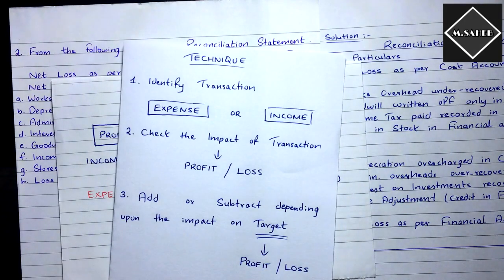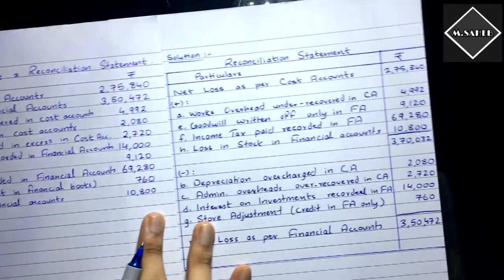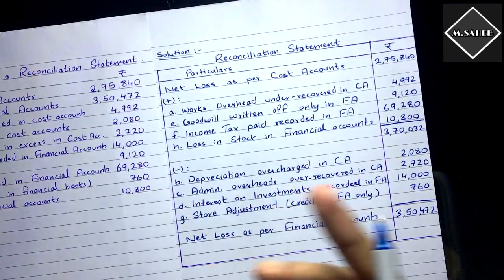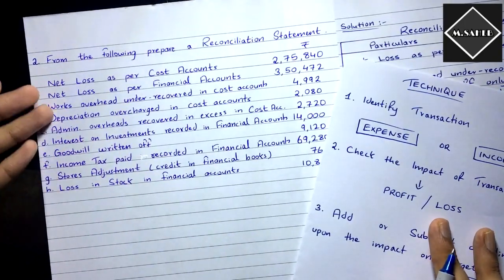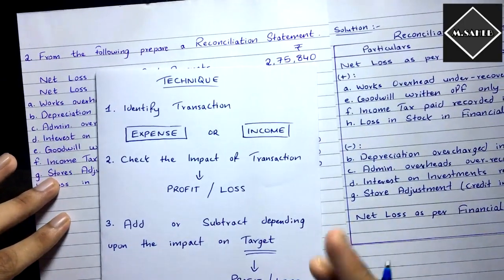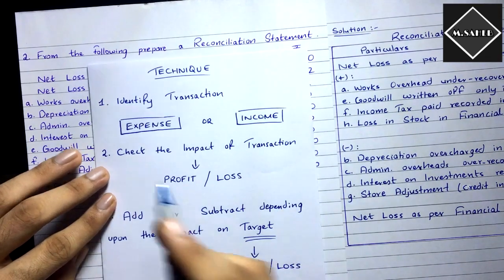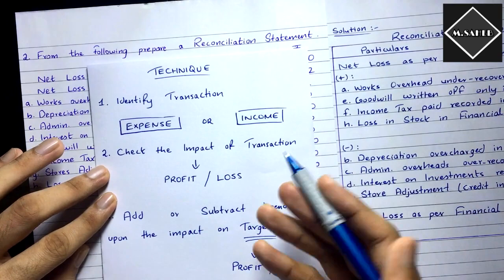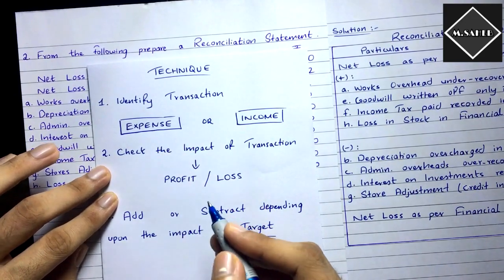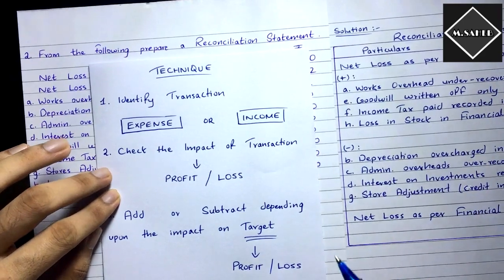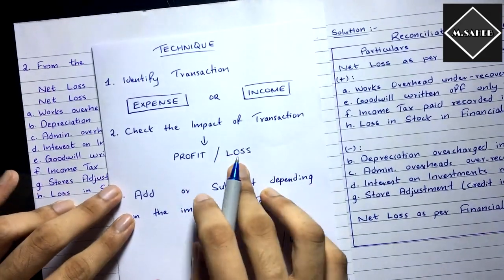The main technique is how to add or subtract each transaction. First, identify whether the transaction is an expense or income. Second, check the impact of that transaction — because of it, is the profit increasing or decreasing? If profit is given, check the impact on profit. If loss is given, as in this question, check the impact on loss.